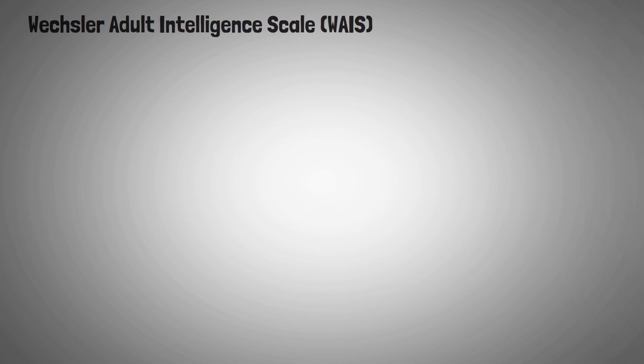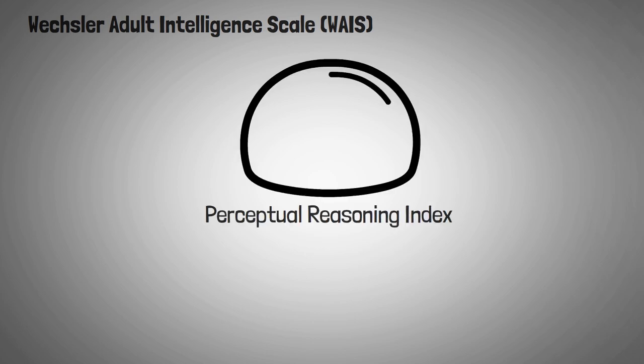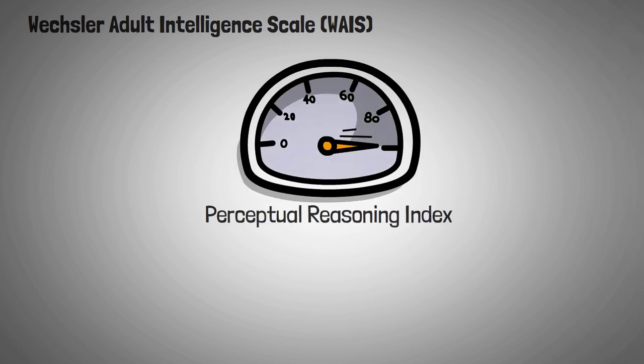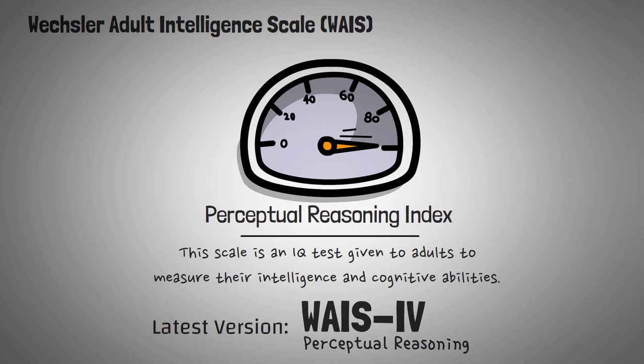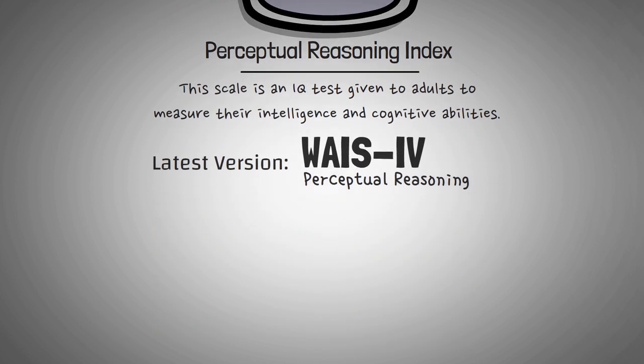One of the ways we measure intelligence is through the Wechsler Adult Intelligence Scale, the WAIS. The Perceptual Reasoning Index Scale is one of the four subtests of the current WAIS. This scale is an IQ test given to adults to measure their intelligence and cognitive abilities. WAIS-4, the current version of the test, is the first version that includes a perceptual reasoning scale. In earlier versions of the WAIS, perceptual reasoning was called perceptual organization.